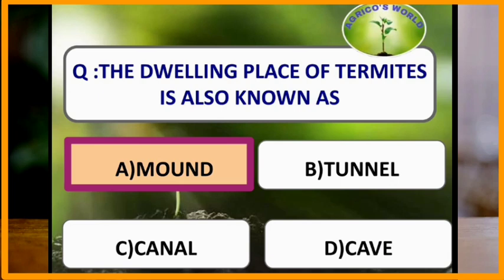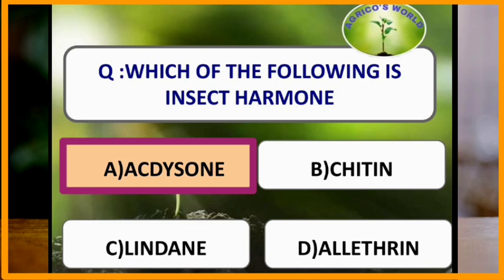The dwelling place of termites is also known as a mound. Ecdysone is an insect hormone.